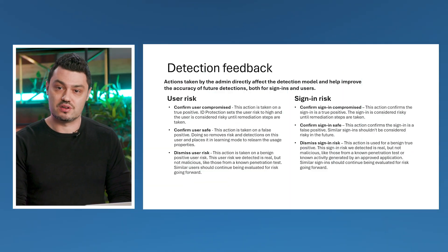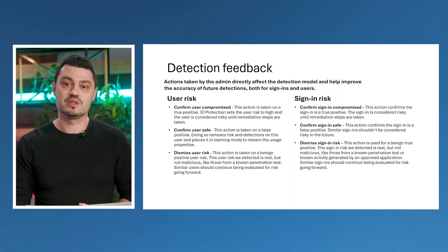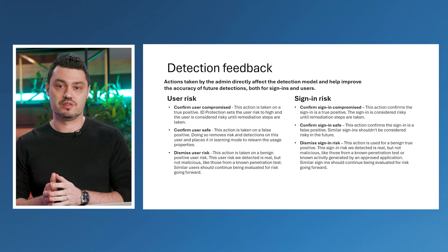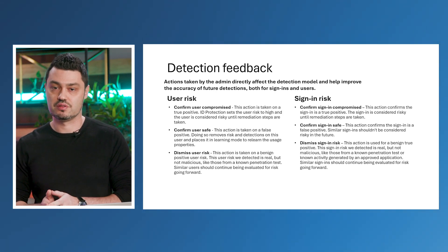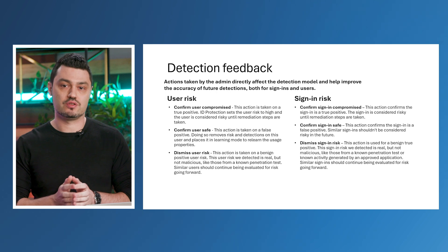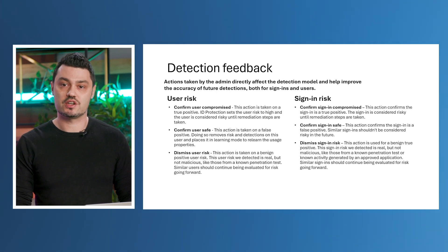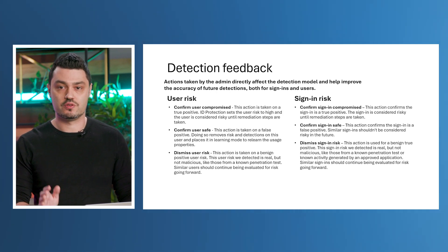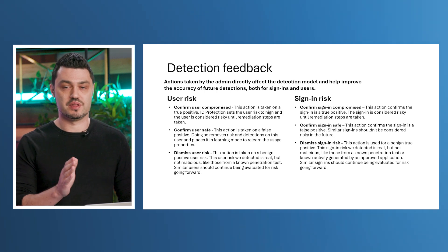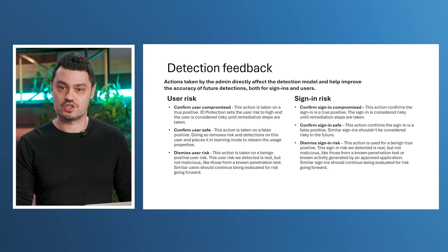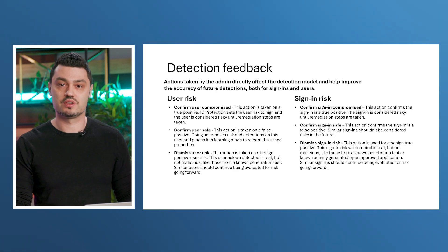In the past year, we've released a new capability, which means that the actions taken by the admin within the product are directly affecting our detection models and help improve the accuracy of future detections, both for sign-ins and users. No matter the type of the detection, we have three actions available for you to take: confirm compromise, confirm safe, and dismiss risk. Each of those actions corresponds to the outcome you want to see from future detections.